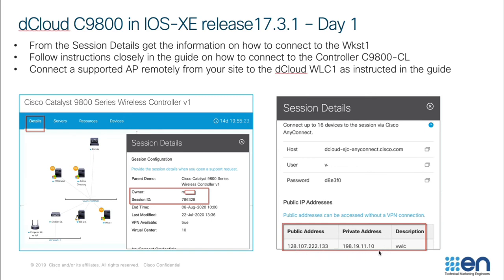To connect to the private address, you need to create a VPN session with the hostname 'dCloud', along with the username and password given in your scheduled session. When the VPN connection is set up, you'll be able to connect to the controller using the private IP address. Without a VPN session, you can connect using the public address. So you connect to this controller with the indicated IP addresses and the login credentials given in your scheduled session.